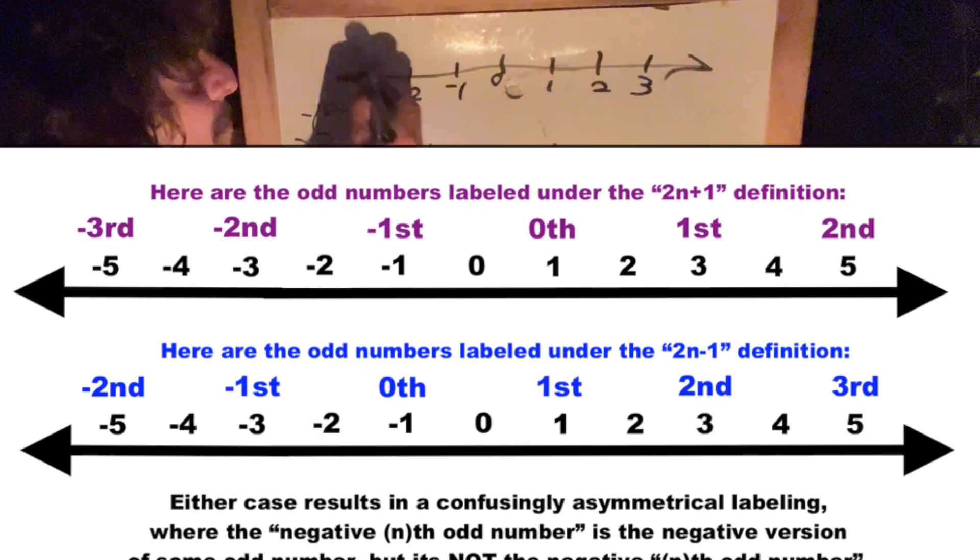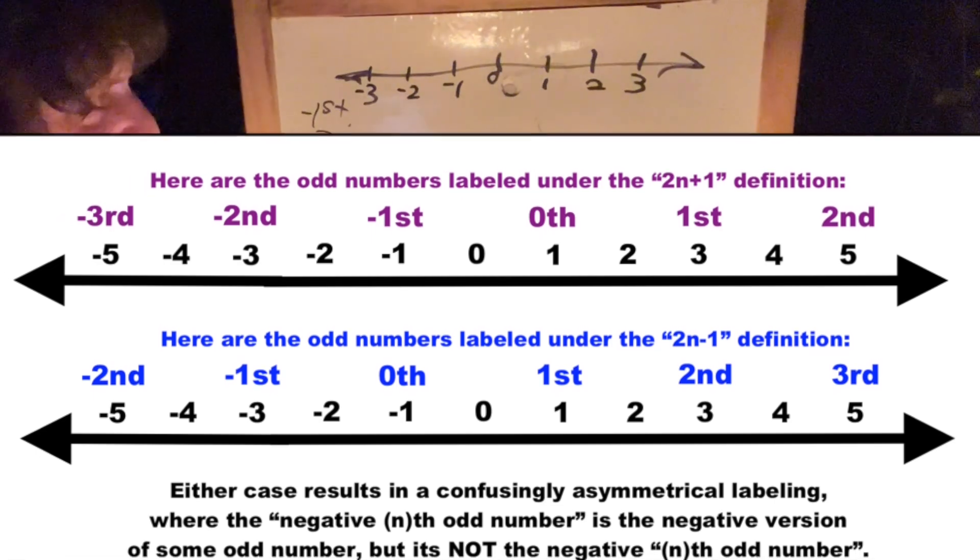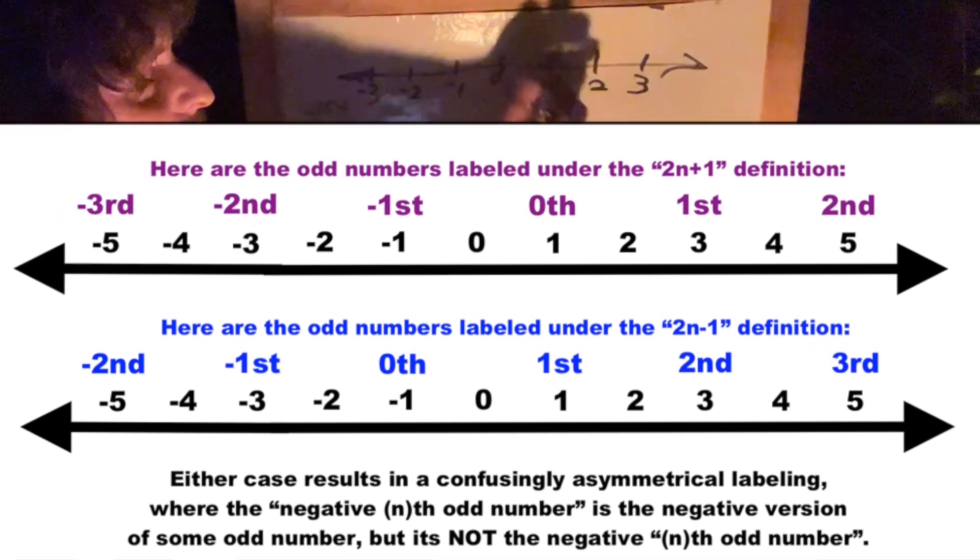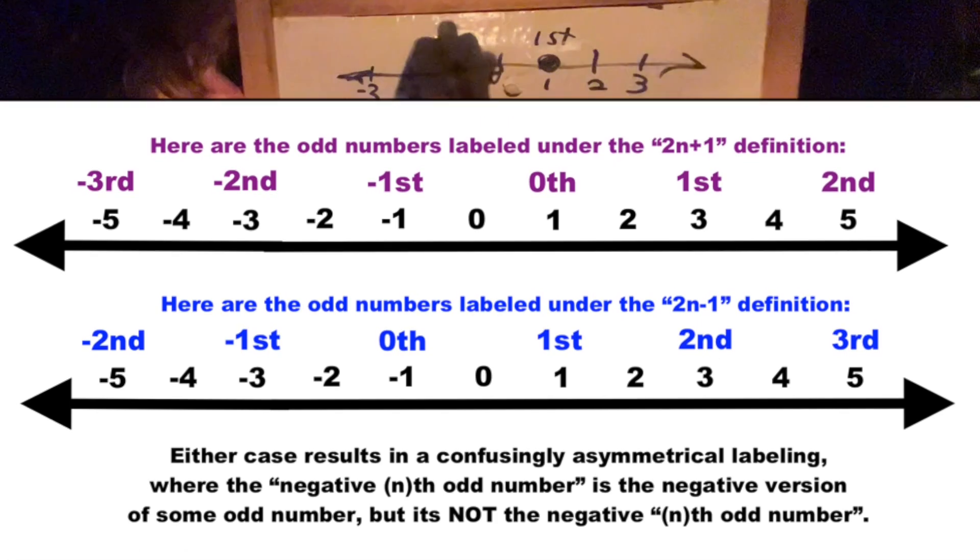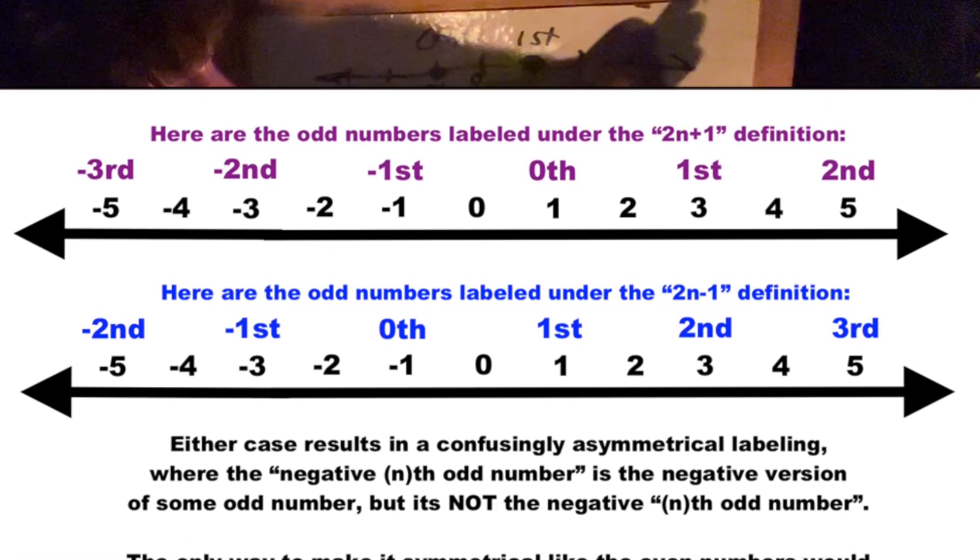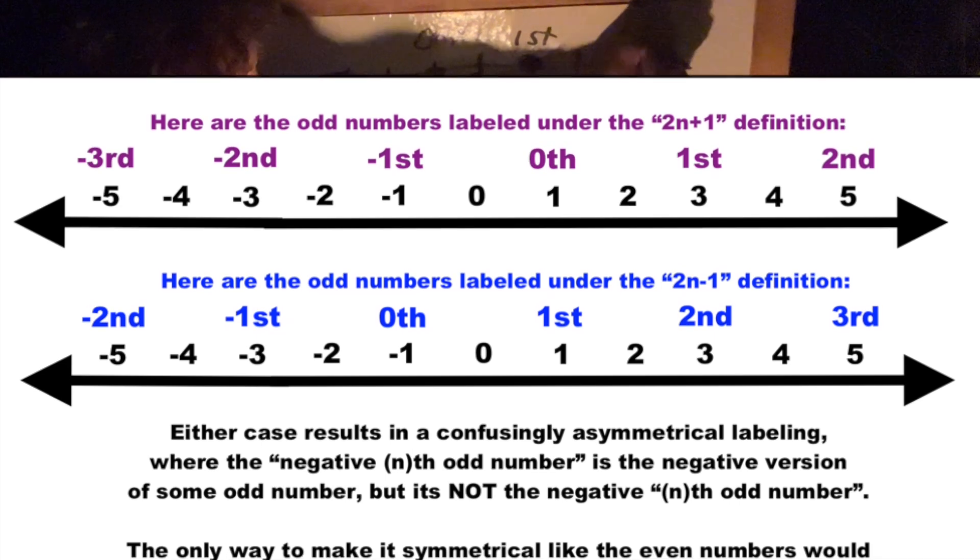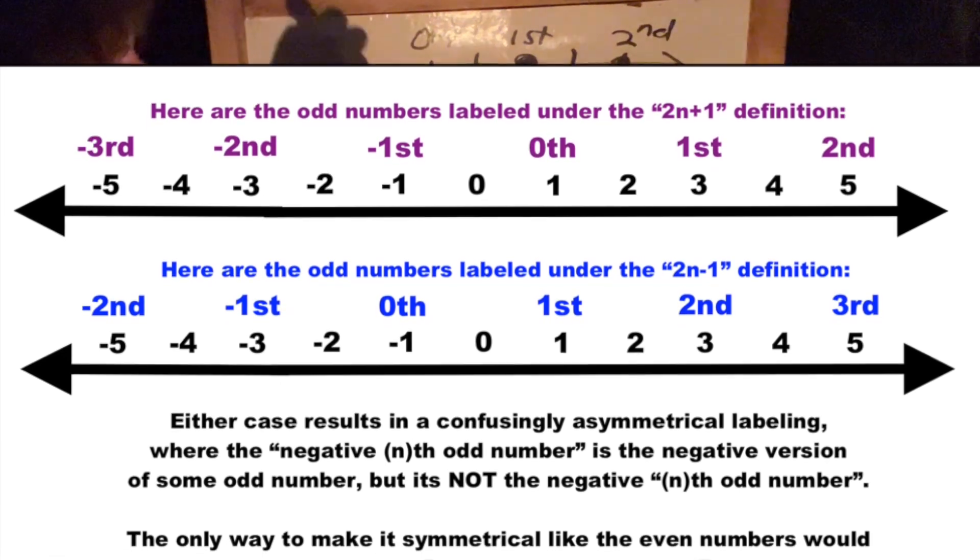Basically, if we draw a number line, and we're looking at the numbers that are odd and trying to label which number they are of odd number, we either can call this the first, but then this one's the zeroeth, and then it's asymmetrical, the second, but the negative first.